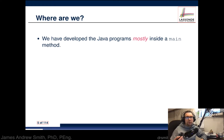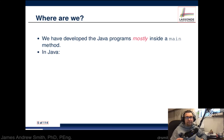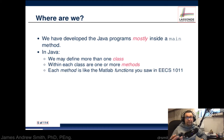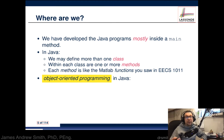So where are we in the course right now? We've been developing Java programs mostly from inside a main method, although we've had other methods and classes that we've implemented either in VPL, the Java Shell, or IntelliJ. In Java we may define more than one class, and within each class there can be one or more methods — these methods are similar to the functions you saw in EECS 1011 in MATLAB.